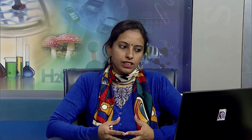Let us now understand the role of insurance in economic development. The premiums paid by customers are deployed in the social sector, infrastructure development, government securities, papers and bonds. Life insurance plays a major role in mobilization of public savings — amounts to the tune of 75,000 crores per year are diverted towards public savings. Savings out of the life insurance fund are utilized in investments for growth, such as infrastructure, housing, railway, and roads. They are also funded for various social security programs like education and health schemes.